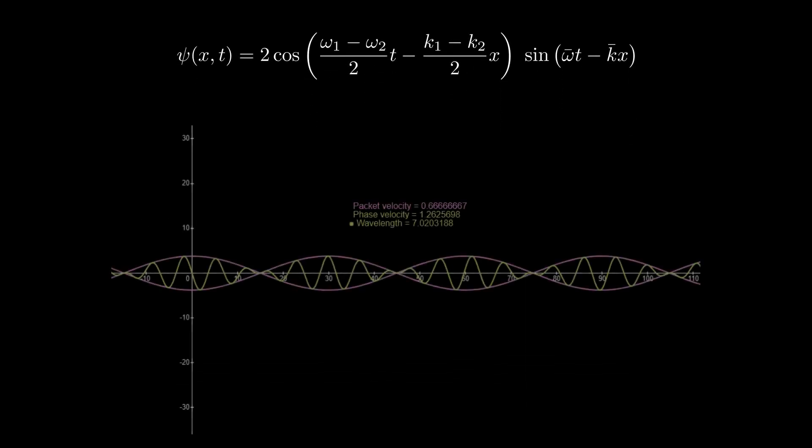If we plot this now, we get a train of wave packets. Note that the wavelength of the sine function is the average value of the waves included in the sum. But we have not yet achieved what we want completely.